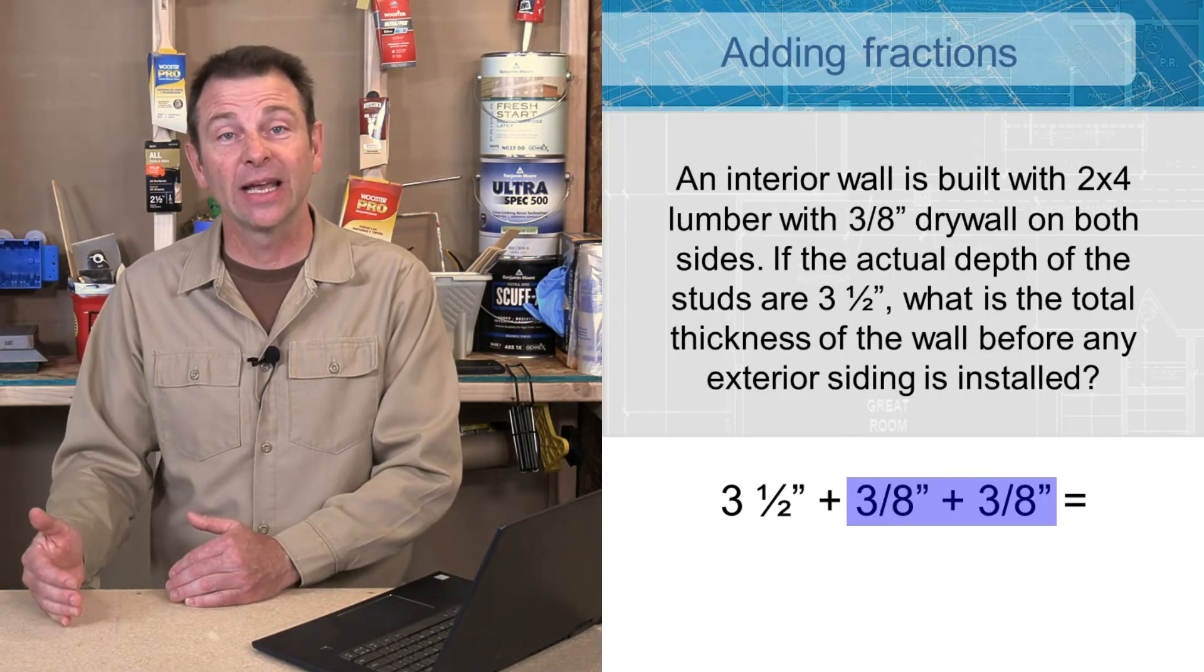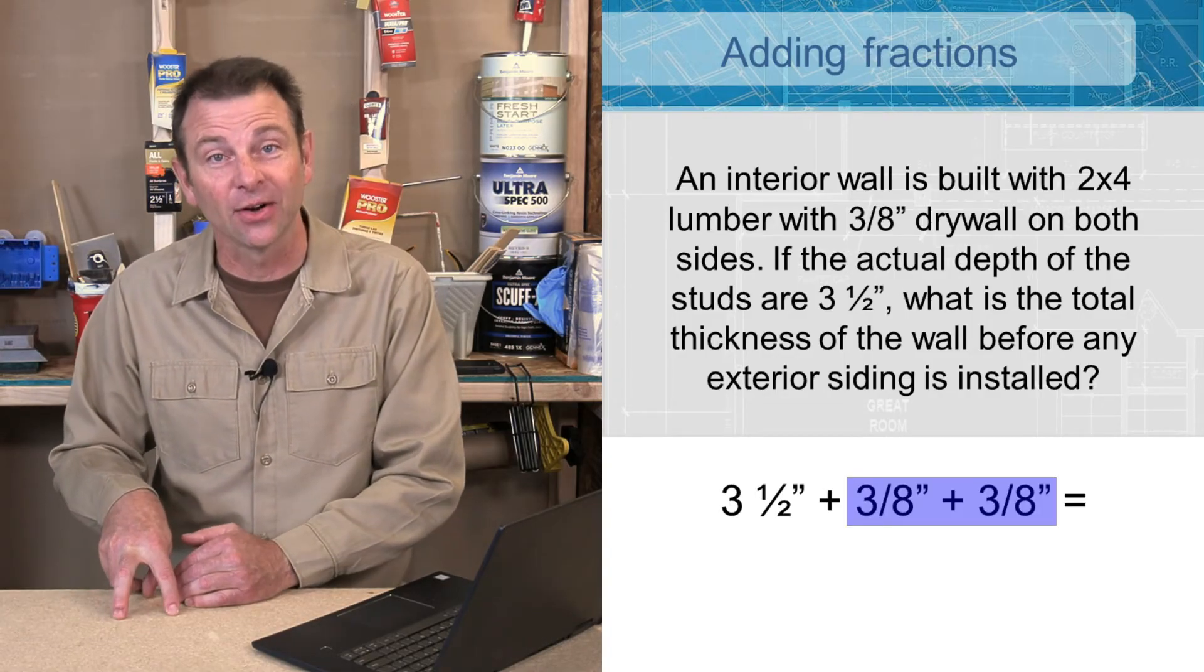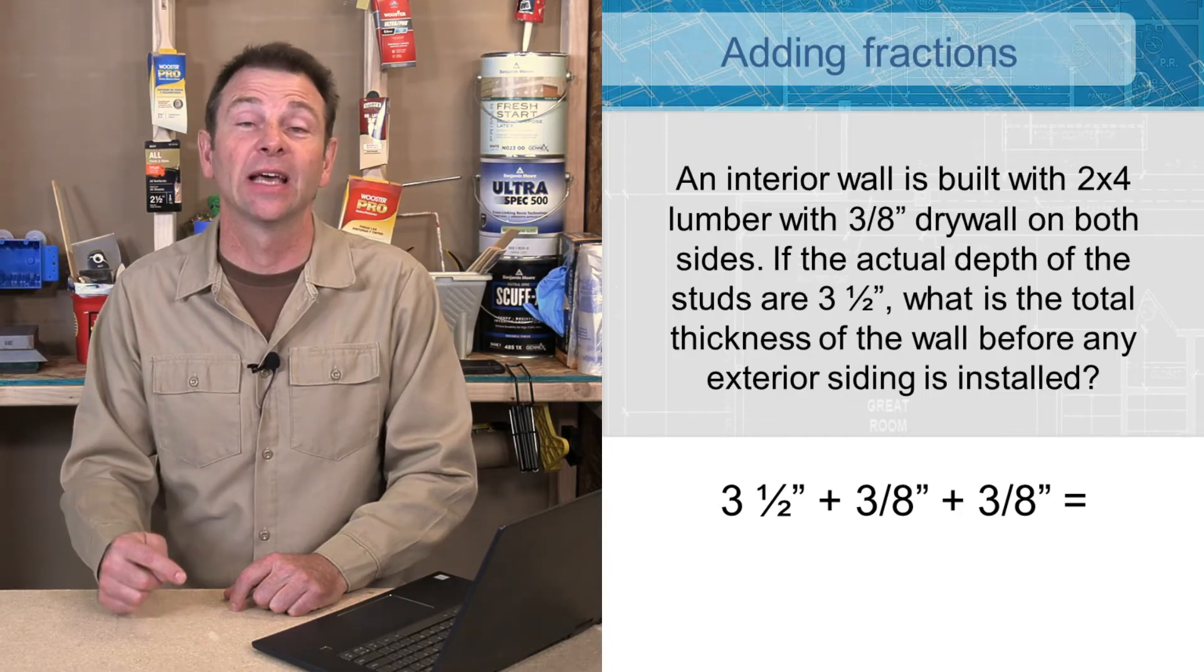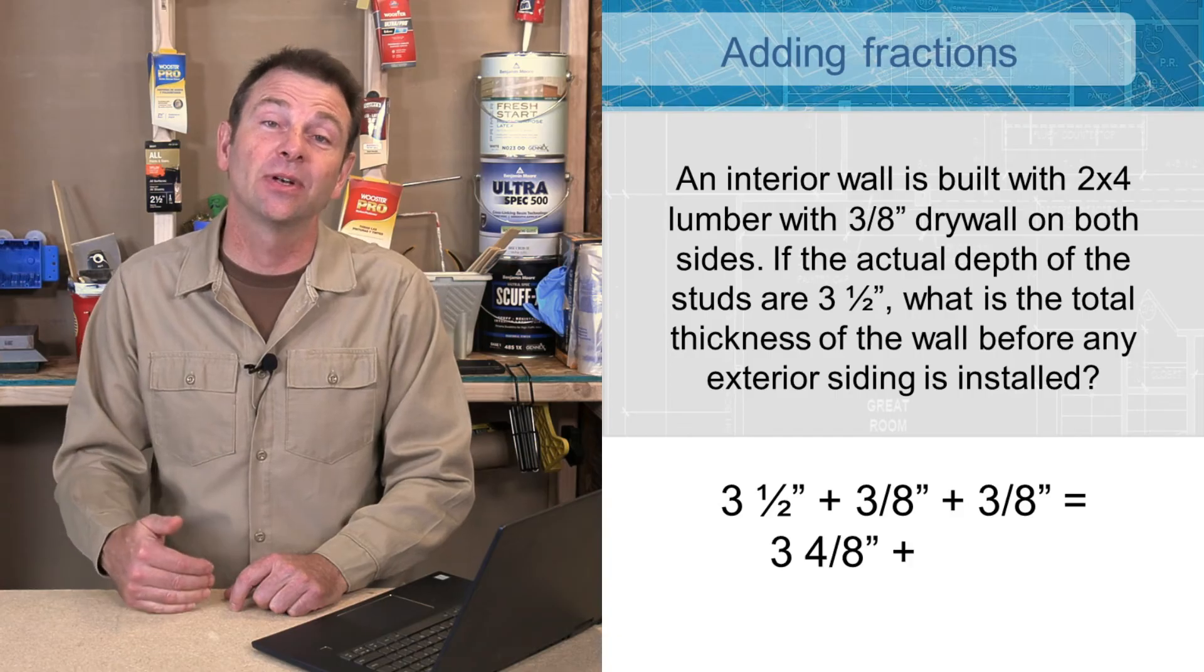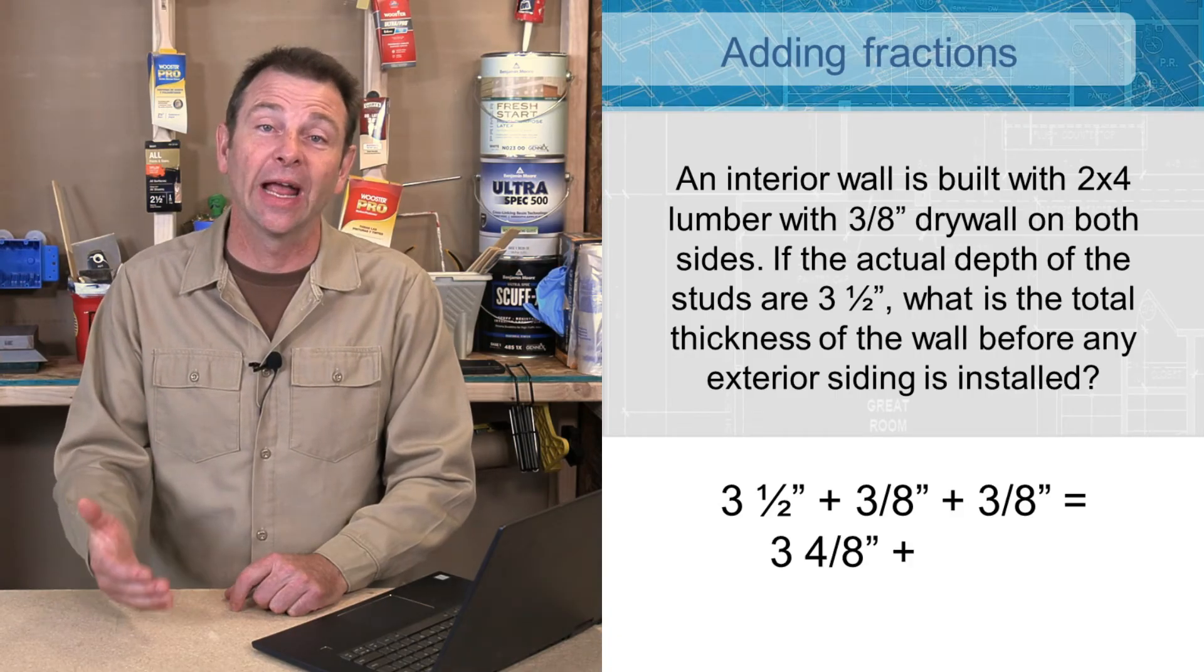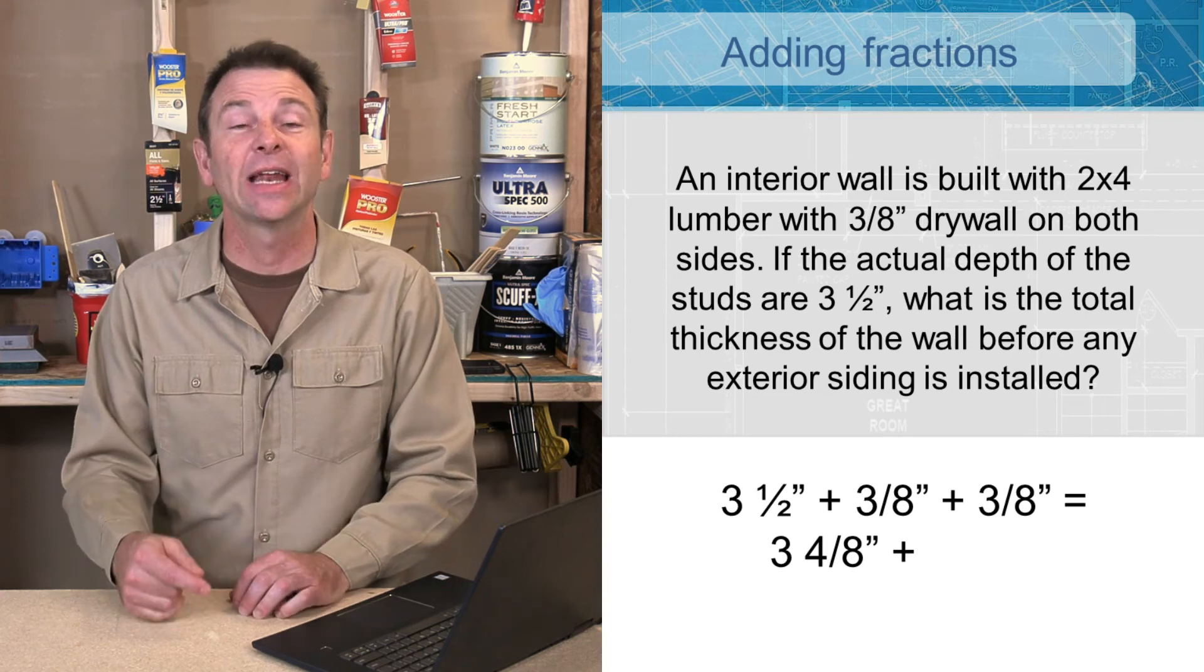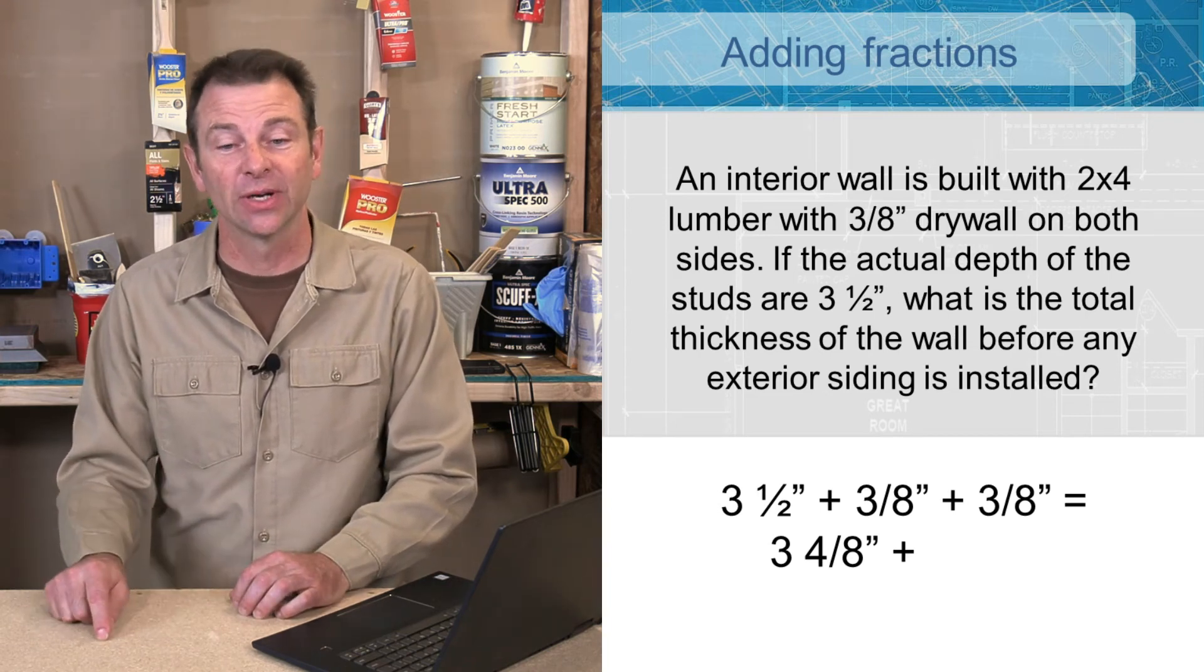That's going to be a 3 and 4/8 - that's the same equivalent number to 3½. And we can add that to 3/8 plus 3/8. We'll add the 3/8 together, that's 6/8. Now we add the 3 and 4/8 to 6/8 and we get 3 and 10/8.